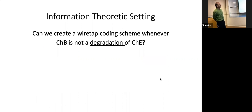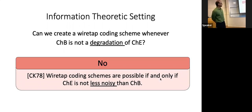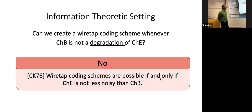Now what can we actually do? Is this an if and only if? Can we hope to show that as long as this degradation condition does not hold, there is a wiretap coding scheme? The question was asked in 1975. Just a few years later, Csiszár and Körner in 1978 showed that the answer is no — if you want an information-theoretic wiretap coding scheme, there's another fairly intuitive notion called 'less noisy.' They showed that if Eve's channel is less noisy than Bob's channel, then there's no hope.